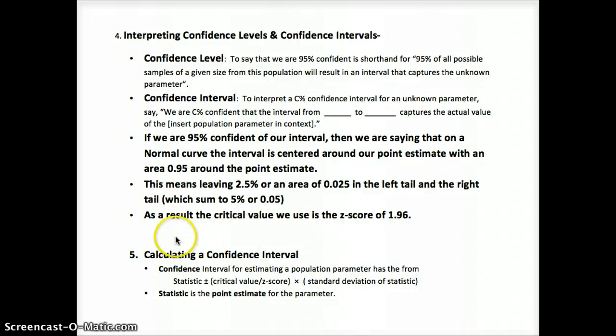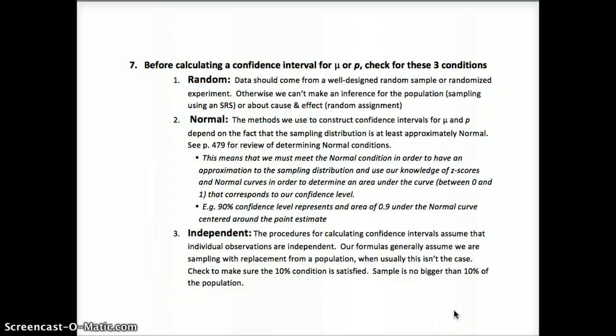We'd state all the important information about the problem, including what's known about the sample size and what parameter of interest we're trying to estimate. We would check to see that we have the random condition met, so that we have an unbiased estimator. The mean of the sampling distribution would equal the true mean if it's unbiased. So if we have an SRS, we'd be good to go there.